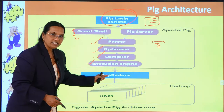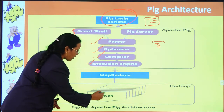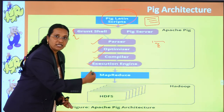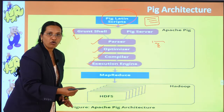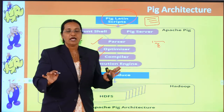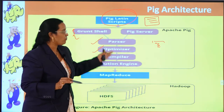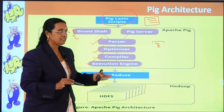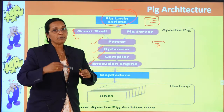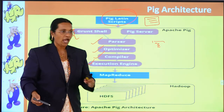Once the Pig scripts are converted into MapReduce code, they go to HDFS to process the operation. HDFS processes as usual with slave nodes, data nodes, and task trackers running. In short, the Pig architecture consists of four important phases — parsers, optimizers, compilers, and execution engine — and once the Pig scripts go through these four stages, they are converted into MapReduce code.